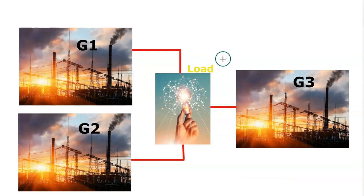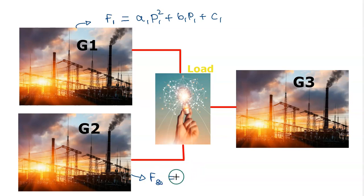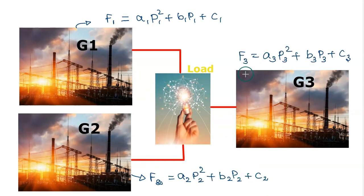Based on this discussion, we can formulate the economic dispatch problem. The operating cost of G1, the first generator, will be F1 = a1·P1² + b1·P1 + c1. Similarly, we can write expressions for the cost of generation for G2 and G3. The overall fuel cost is F1 plus F2 plus F3.